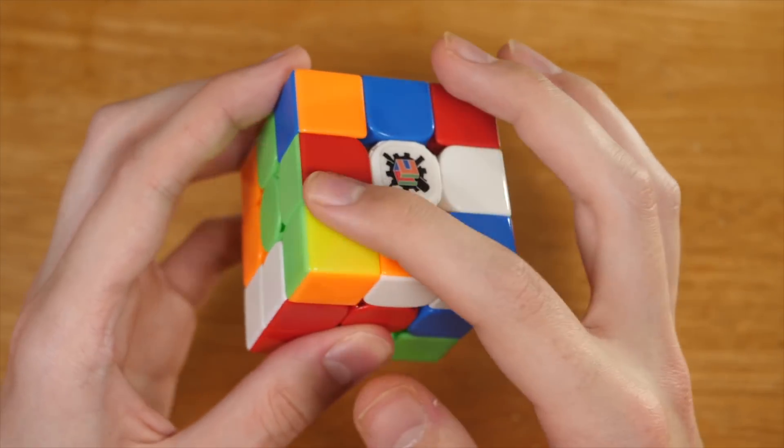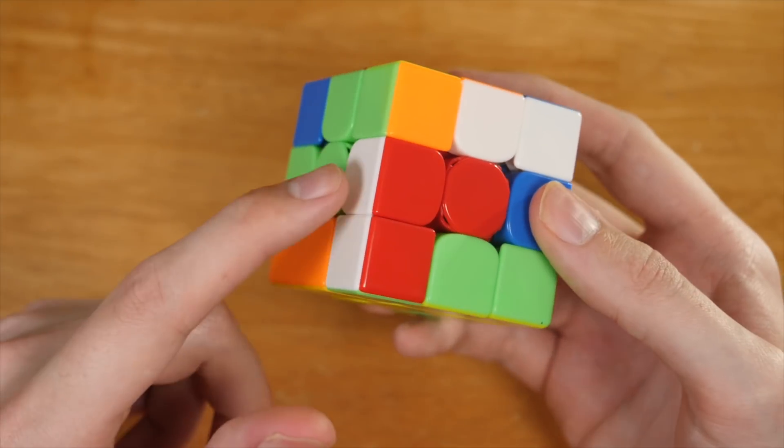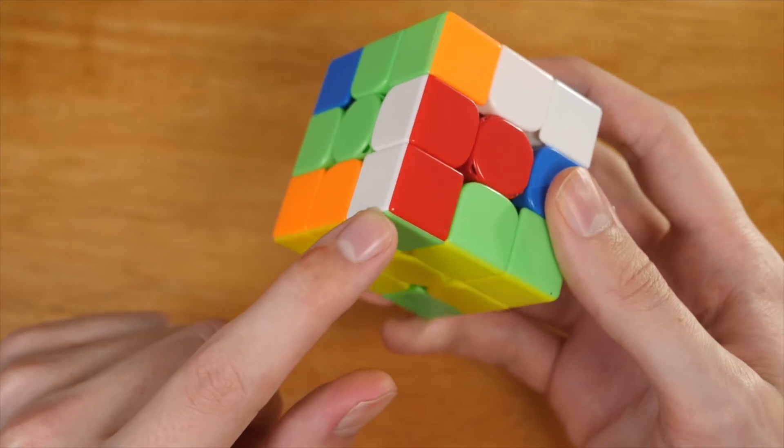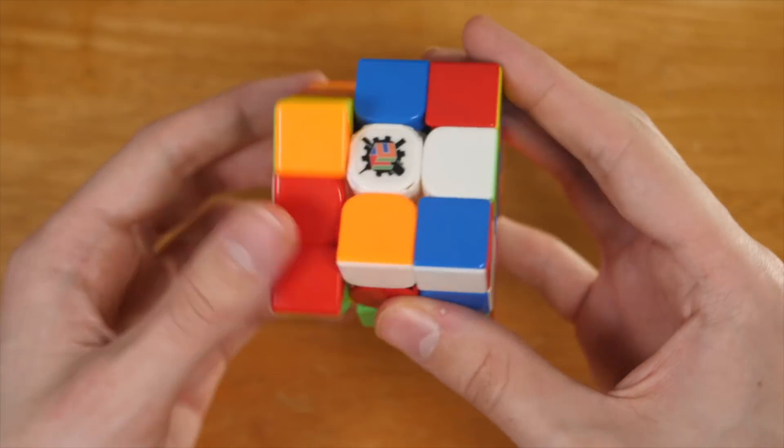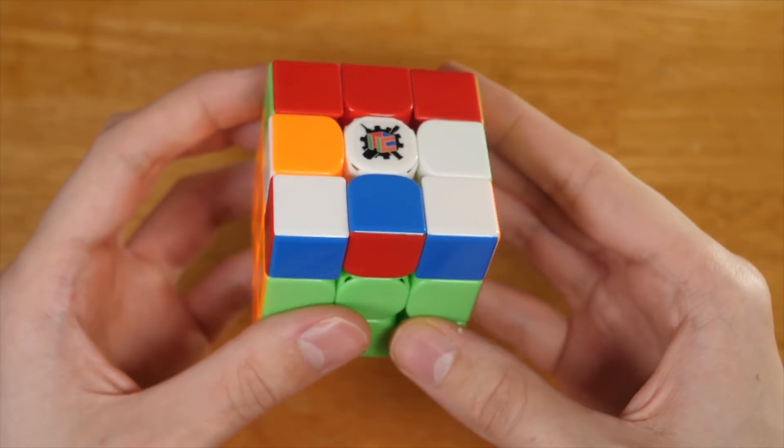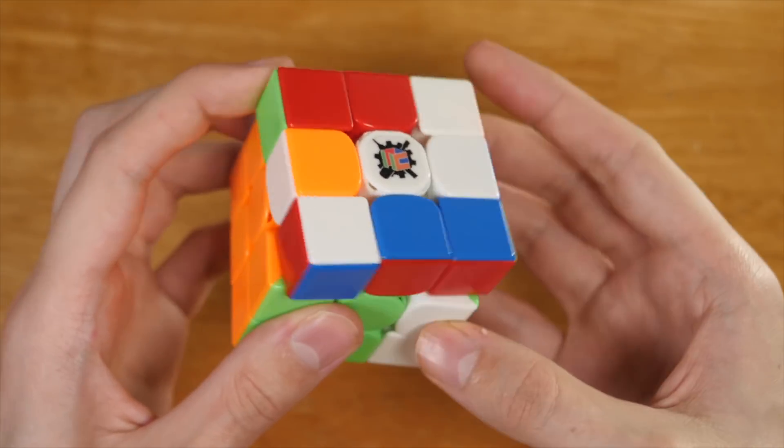when solving this pseudo-pair, he's actually going to set up this final fourth pair. So notice that the green-red edge and the orange-green corner are going together in this case because of the misalignment on the D layer. And when he solves this, a wide D move, or a wide U move, and he's set up the final pair.